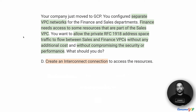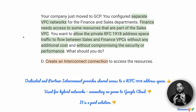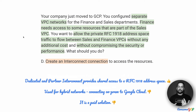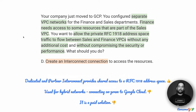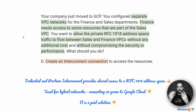Option D suggests that we create an interconnect connection to access the resources. The two interconnect options we have are Dedicated Interconnect and Partner Interconnect. What suits us for this requirement is that it allows us to share the private RFC 1918 address space — so even if you had two networks connected over interconnect, you could access the same set of IPs on both sides. However, interconnect is mostly used for hybrid networks connecting on-prem to Google Cloud. It also has a significantly higher cost when setting up.